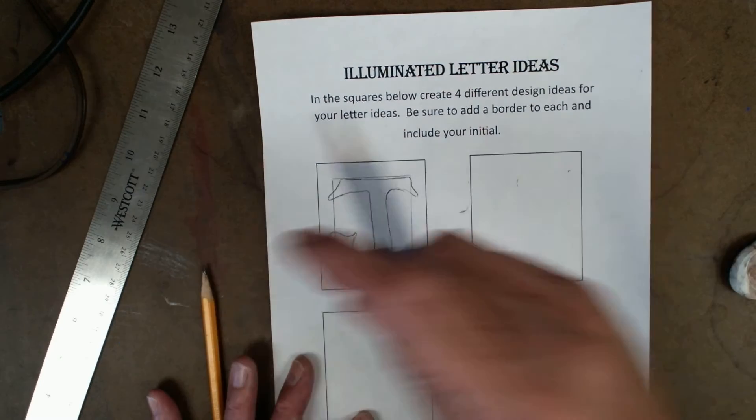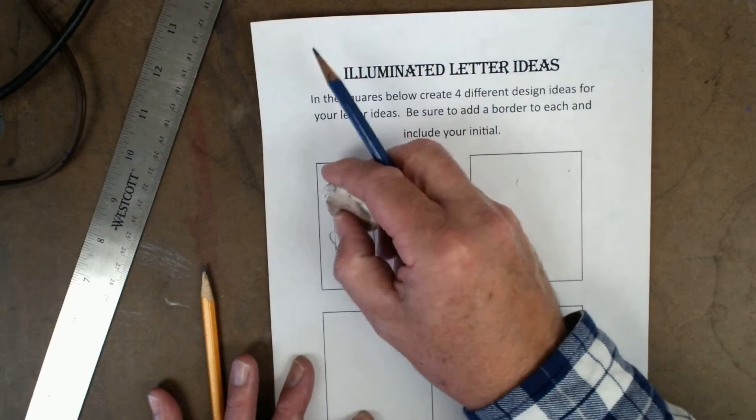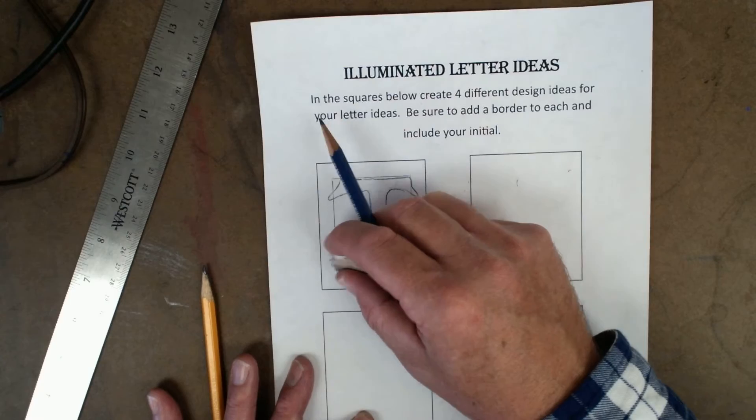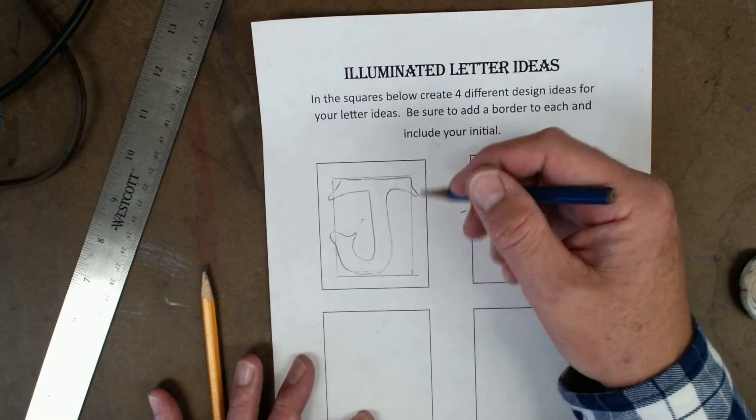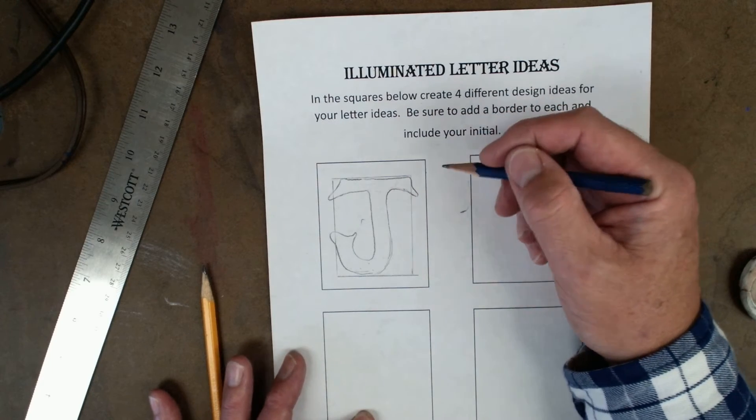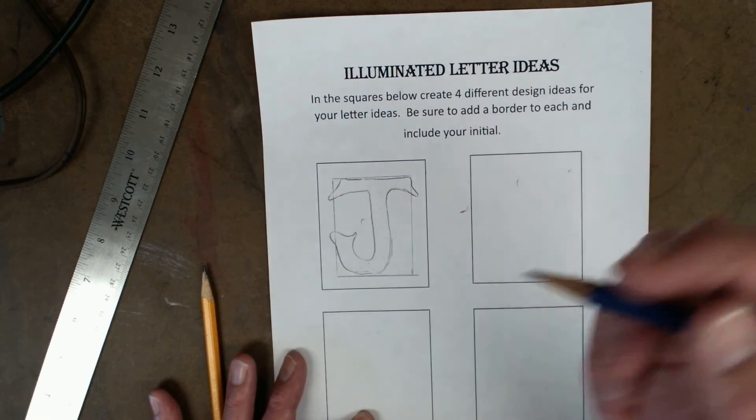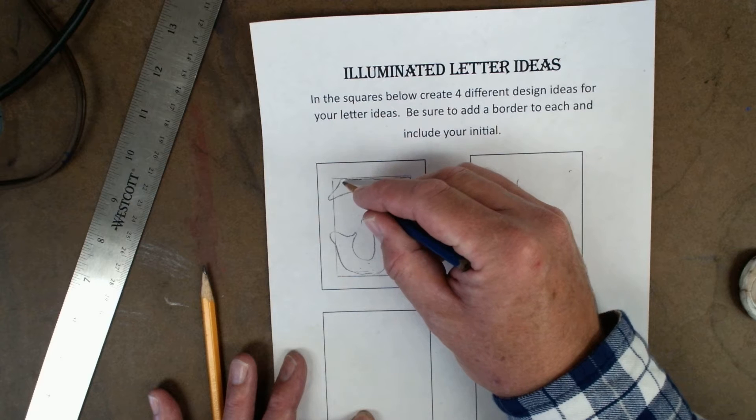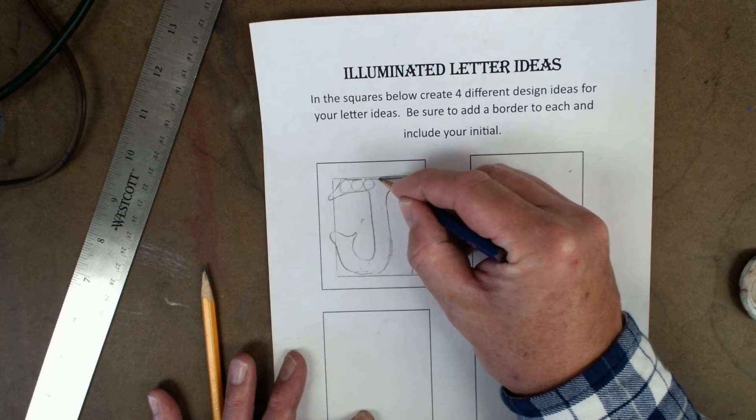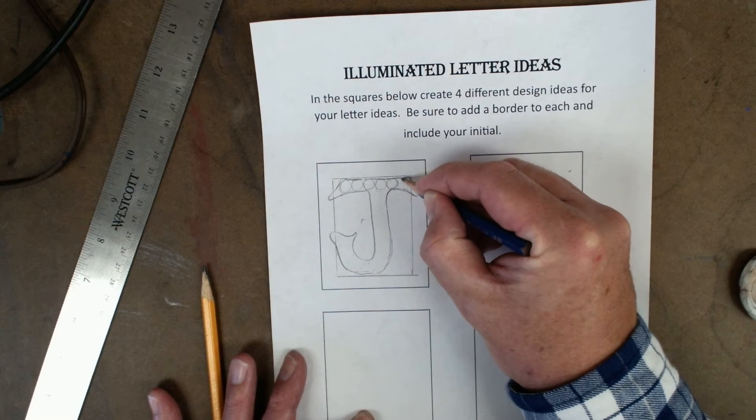I'm going to go ahead and kind of add that J in through here. If you want, you can erase this up through here. And then you want to think about, what are some patterns that I can put on here. Now I have those two videos already uploaded on Schoology too, you can check out. Maybe I want to have kind of like a little bit of a circular pattern that's going to go on the top here.